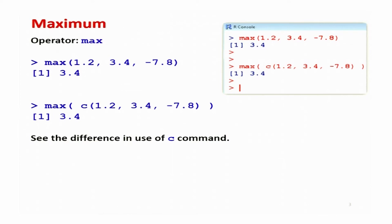These built-in programs have been given names. If you want to find the maximum of some numbers, the name of the program is MAX. You can call this program by this name and it will provide you the maximum value among the given numbers. For example, I write max and within the parenthesis I write the numbers 1.2, 3.4, and minus 7.8. The maximum value out of these three numbers is 3.4, so the output comes out to be 3.4.